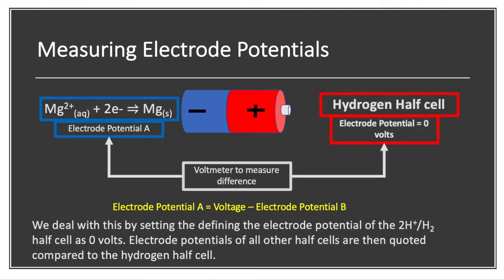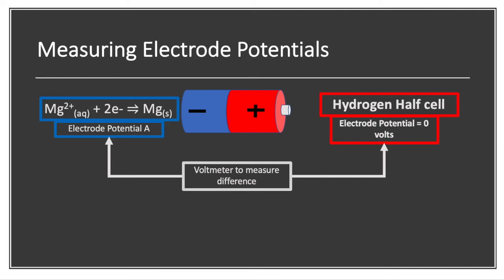So when we do that and we set up our cell now, we can compare our magnesium half cell, which will be electric potential A. So the charge on that piece of magnesium metal with the charge of the hydrogen half cell. And we say that hydrogen half cell has a potential of zero. So whatever reading we have on the volt meter is purely due to the magnesium.